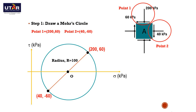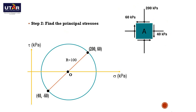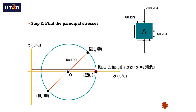We may proceed to Step 2: finding the principal stresses. First, we find the major principal stress. The major principal stress is the maximum normal stress in the Moore's circle. The coordinate for the point with the maximum normal stress is (220, 0). The x-coordinate represents the normal stress, thus the major principal stress is 220 kPa. The minor principal stress is the minimum normal stress in the Moore's circle. The coordinate for the point with the minimum normal stress is (20, 0). The x-coordinate represents the normal stress, thus the minor principal stress is 20 kPa.